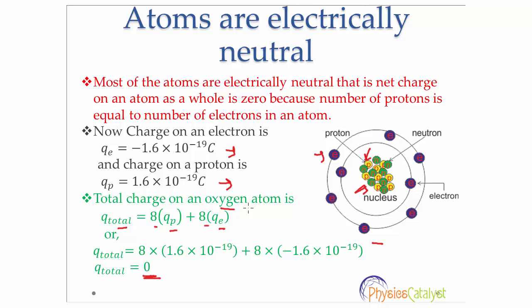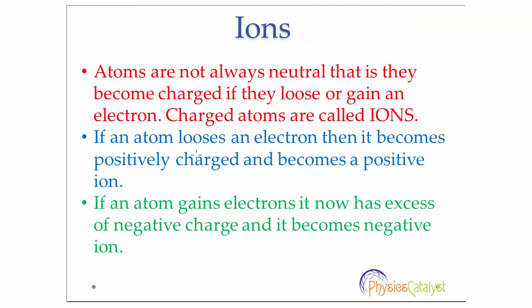The same would be the case with all other atoms. Now atoms are not always neutral. They can become charged if they lose or gain an electron, and these charged atoms are called ions. If an atom loses an electron, it becomes positively charged and becomes a positive ion. If an atom gains an electron, it has excess negative charge and becomes a negative ion.